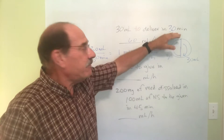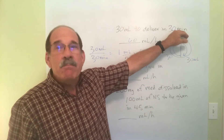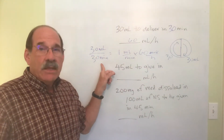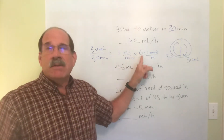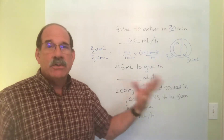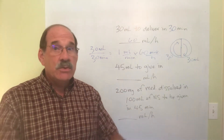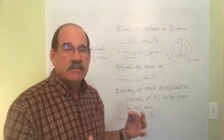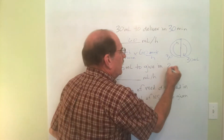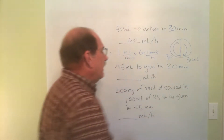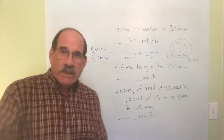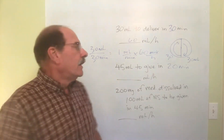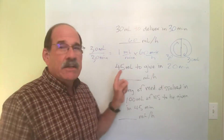Here's the pattern: if the time given is less than one hour, you take the milliliters, divide by the number of minutes to get milliliters per minute, then multiply by 60 to convert to milliliters per hour. Let's do another example. Let's say we're giving 45 milliliters in 20 minutes — 45 milliliters of some liquid medicine in a syringe pump, to be delivered over a 20-minute time frame.